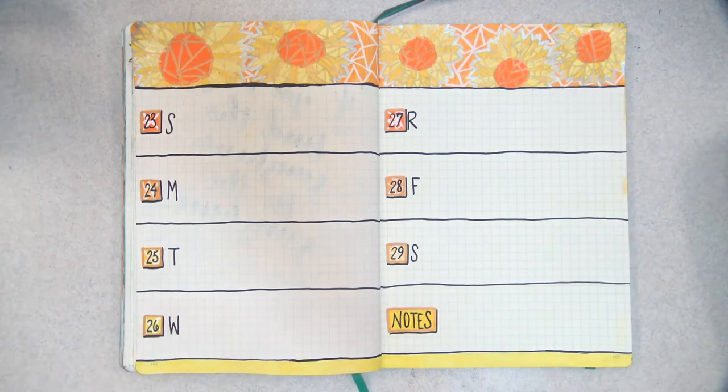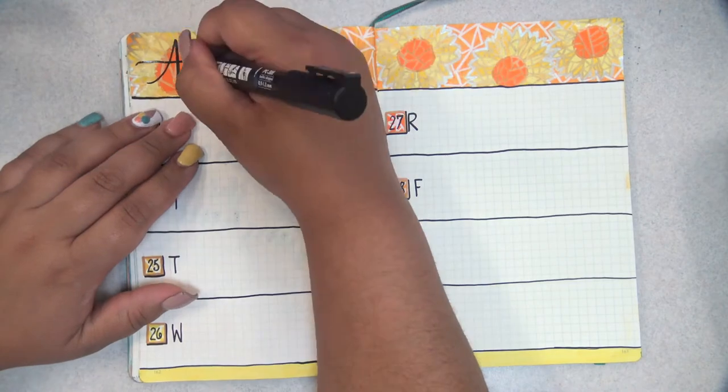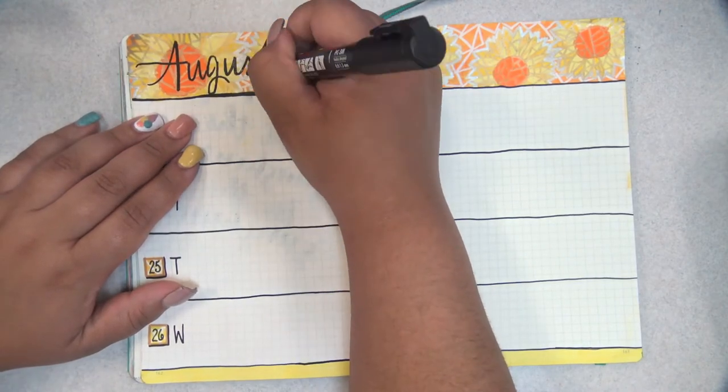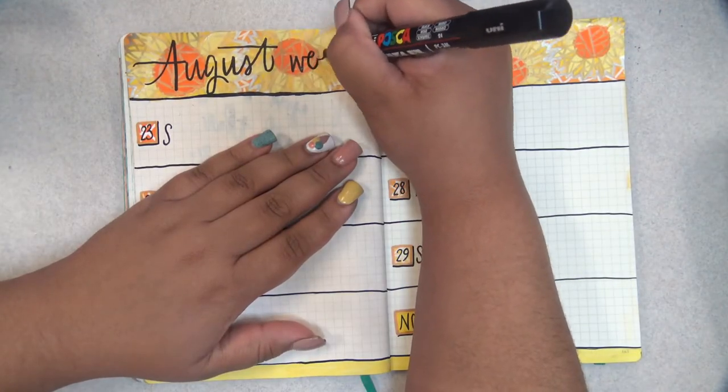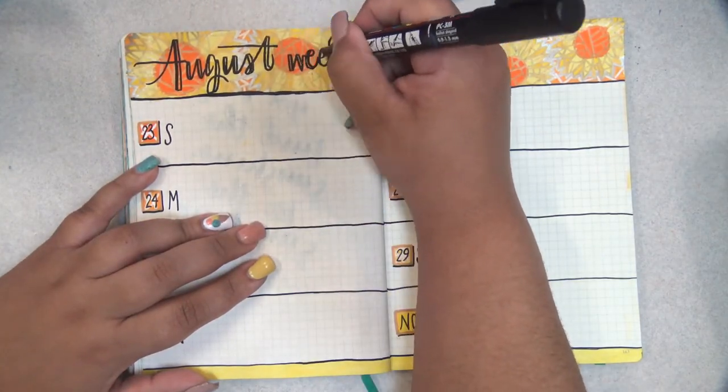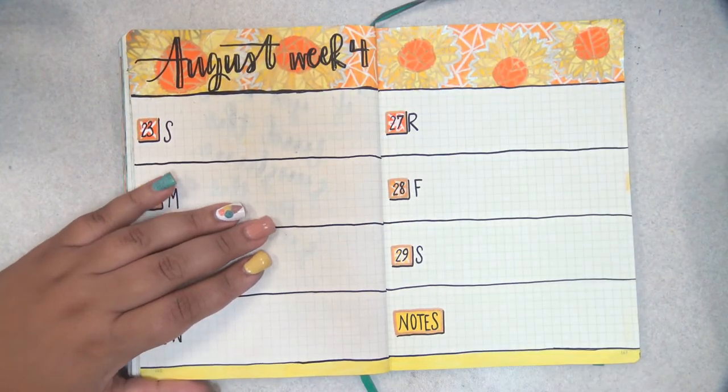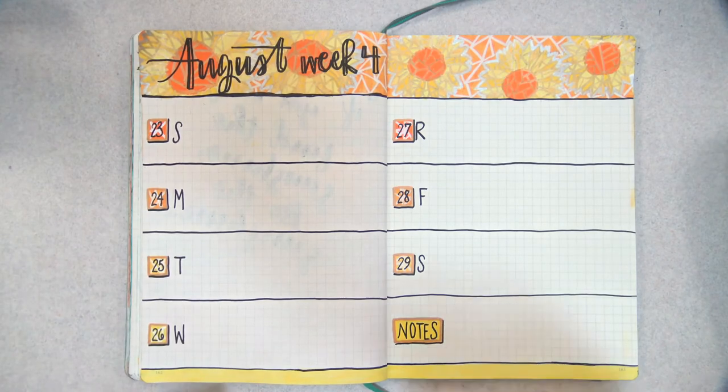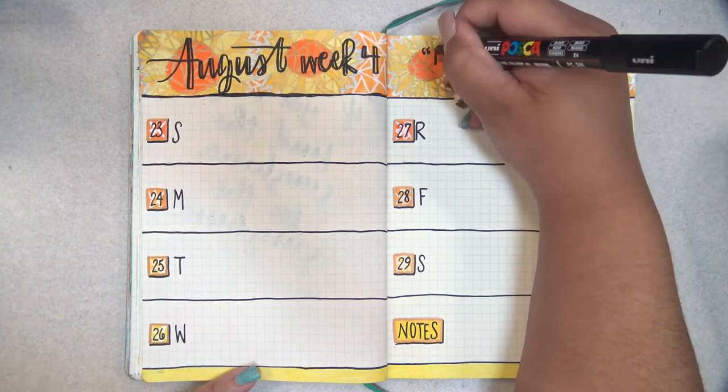And after all that was done, I added August week 4 on the left hand side on top of the mosaic in a black Posca, before adding the quote on the right hand side, which again you may have seen the picture of on my Instagram. For this week I chose: the sun shines not on us, but in us.